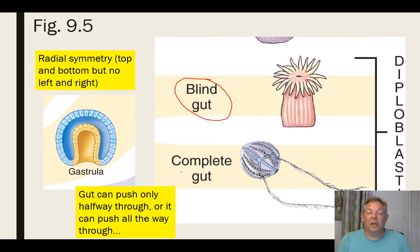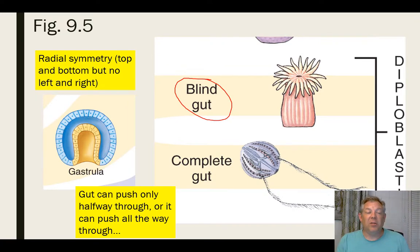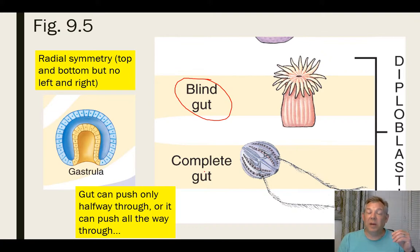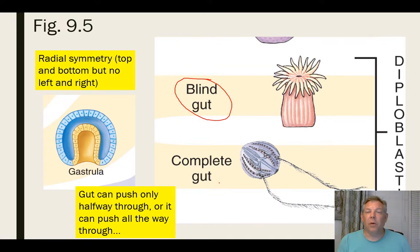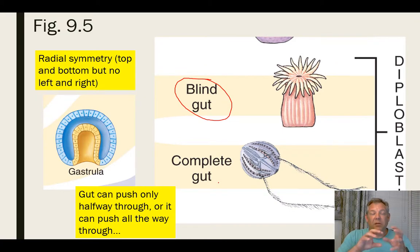In other diploblasts, the gastrula can push all the way through, giving you an opening on either end — that's a complete gut, where food comes in one end and waste goes out the other. You see that in things like comb jellies or other organisms. Again, looking at how organisms develop gives us a clue to how they're related.